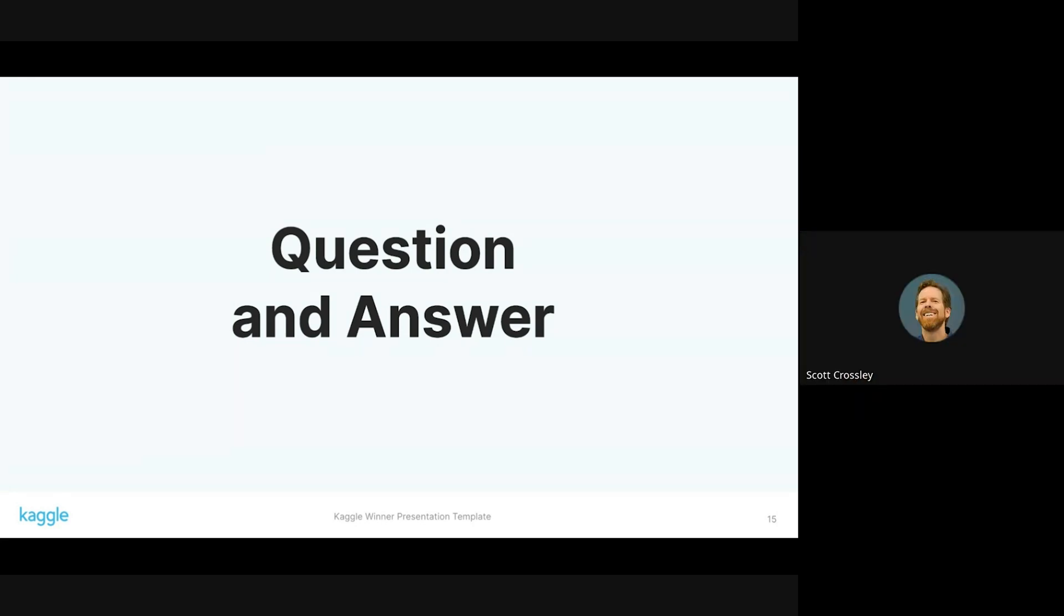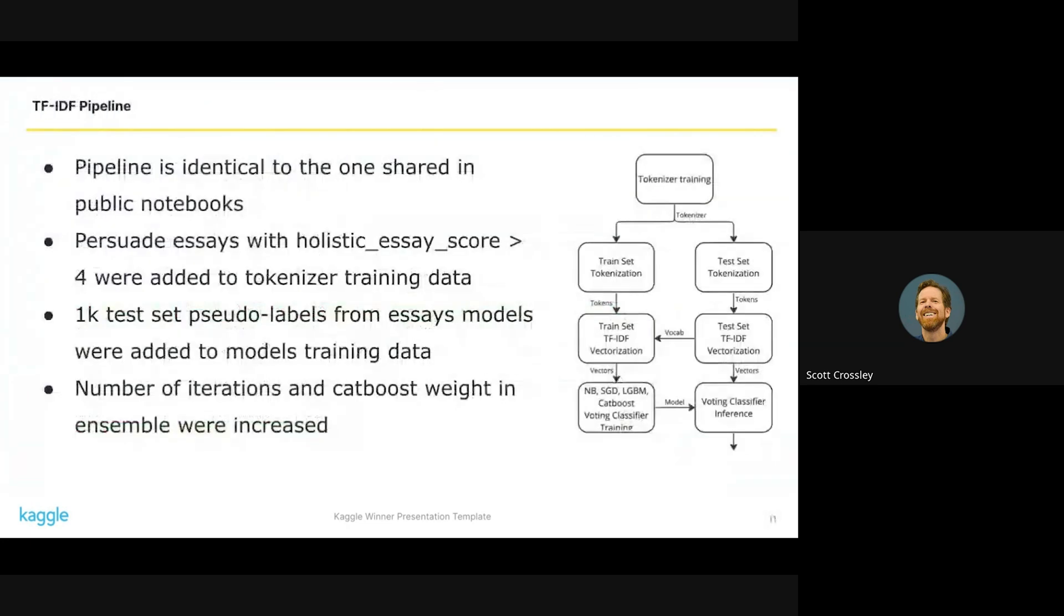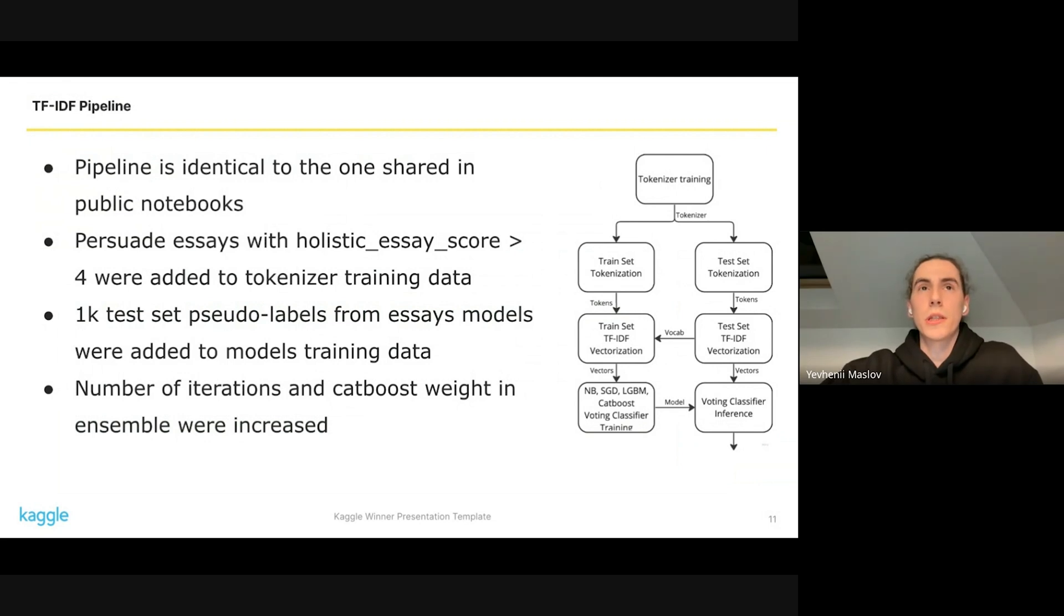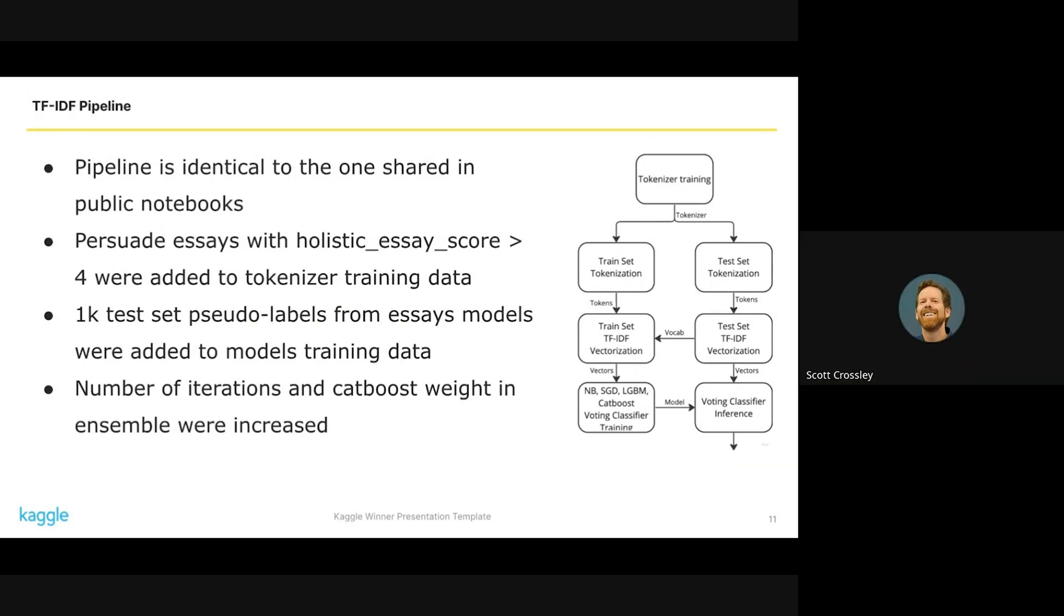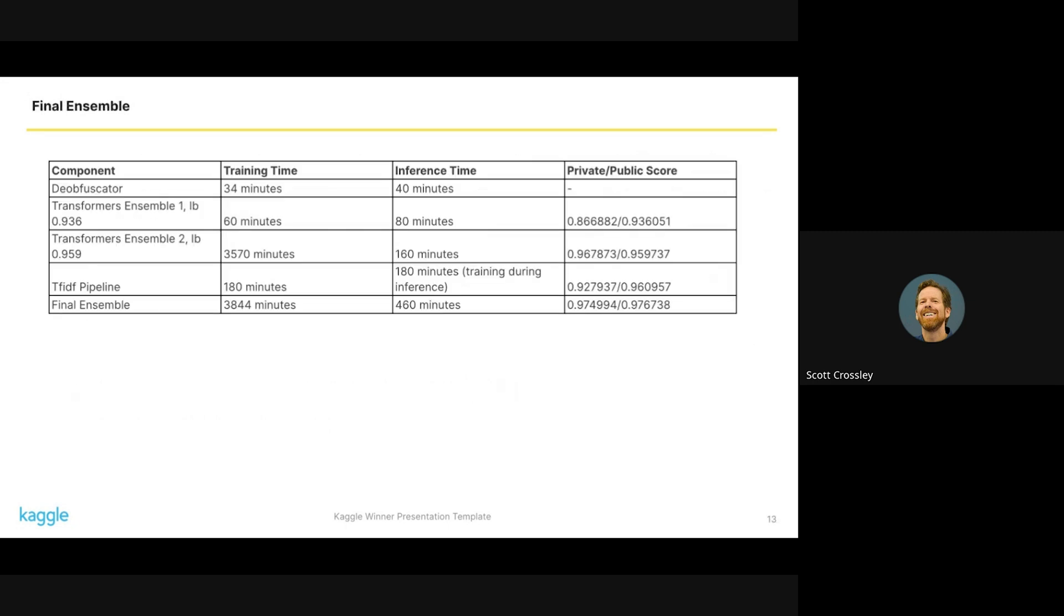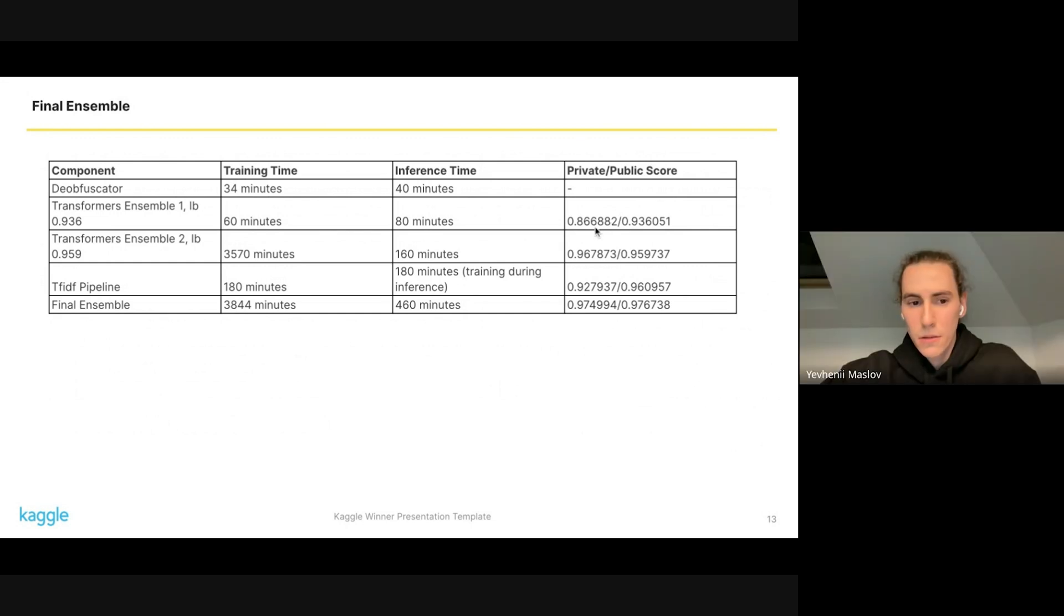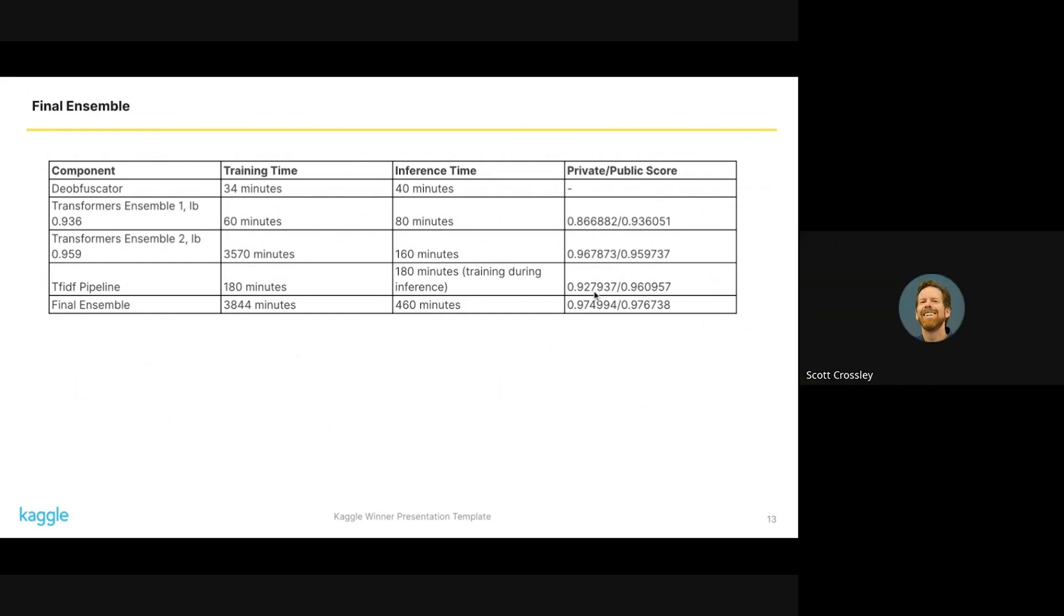Thanks for this. A real quick question - this is the first time that I've seen that TF-IDF pipeline used here. Was this just a traditional kind of TF-IDF pipeline where you were comparing the differences between AI generated and human generated essays? Yeah, it's just a classifier on top of TF-IDF vectors. You had shown results with and without it - it seemed like it performed pretty well with just TF-IDF. Yeah, it's 0.927 private score.